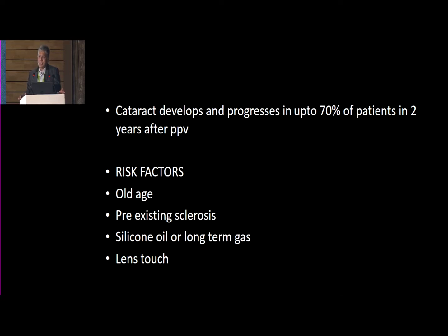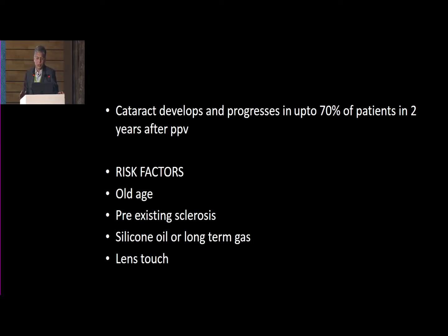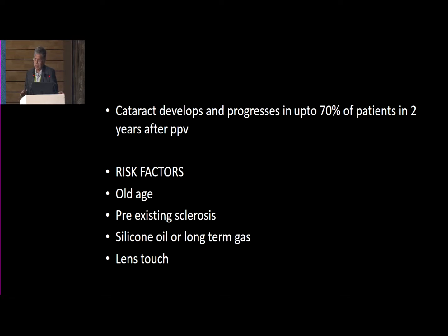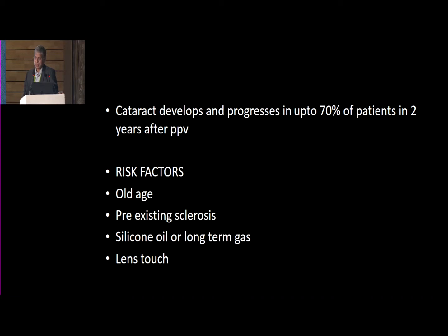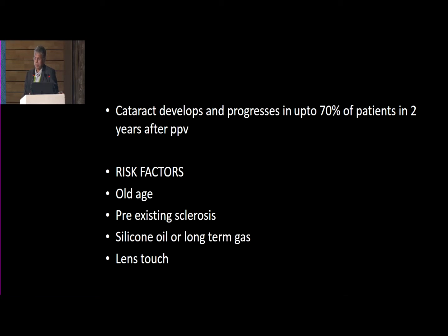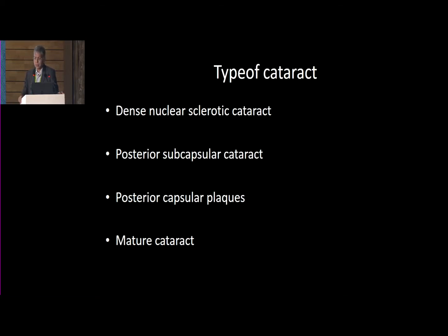One of the most common complications is cataract, which develops and progresses in up to 70% of patients within two years of pars plana vitrectomy. The risk factors are old age, pre-existing sclerosis, silicone oil tamponade, long-term gas, and lens touch.